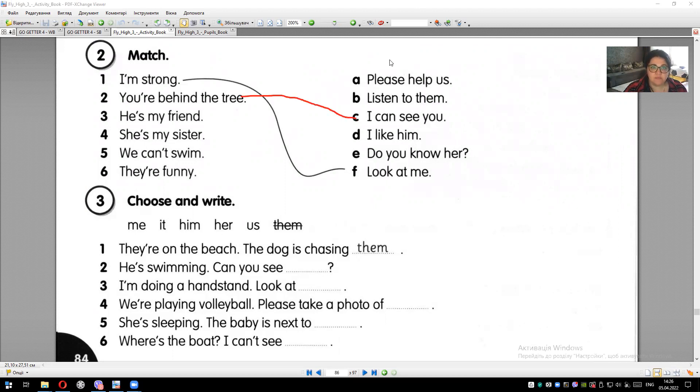I can see you. I can see you. He's my friend. He's my friend. He's my friend. I like him. I like him. Let's look at the next one. She's my sister. She's my sister.